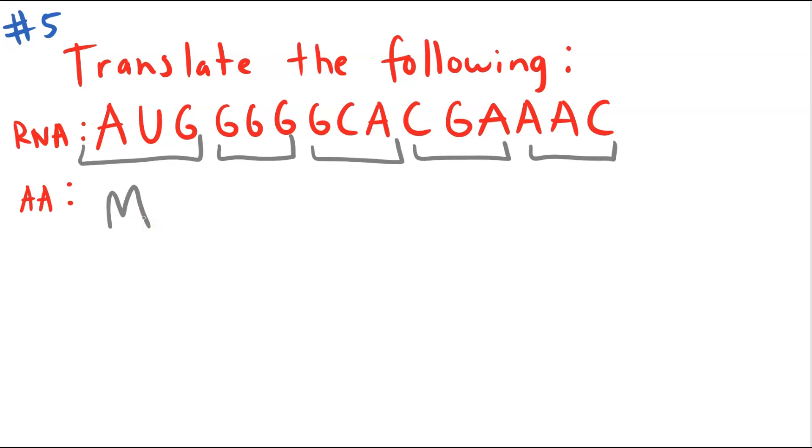GGG would give you glycine. GCA would give you alanine. CGA would give you arginine. And AAC would give you asparagine. So you should get that single letter abbreviation for your chain of amino acids.